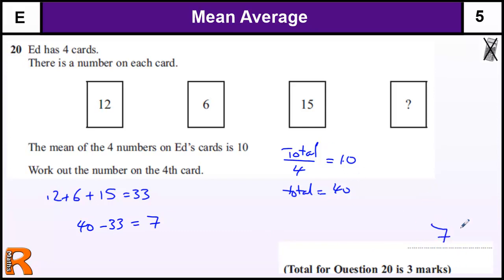So there's going to be all three marks on the number 7, but if you worked out the total is 40 and show that somewhere, or do the 4 times 10, then that shows it's 40, so you get one method mark for getting the 40.